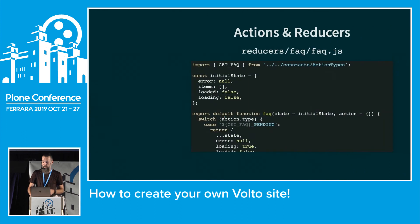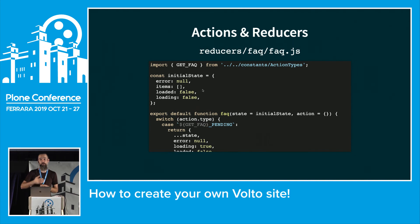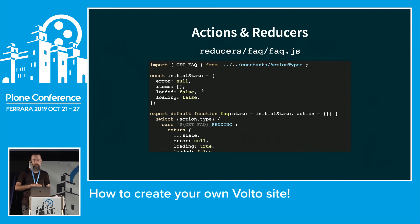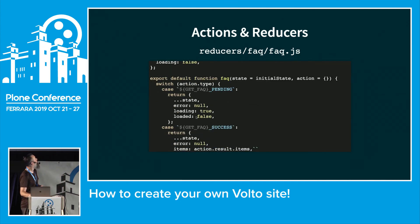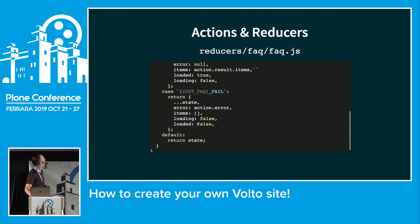We wire it up in the index file for actions and export it. Then we write the reducer. The middleware handles all side effects — actually fetching data from the backend. When doing a getFaq call it sends interim actions: 'pending' meaning the request was made but waiting for a result (we set loading to true, loaded to false), then 'success' meaning no error, loaded true, and we set the items. We also have a fail handler for errors.